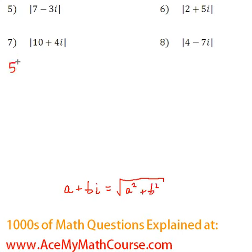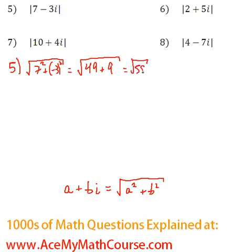Let's start with number 5. Here we have 7 minus 3i, so the absolute value would be just 7 squared plus negative 3 squared. That will be 49 plus 9, which is the root of 58, square root of 58.